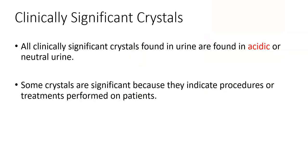Those are all the normal crystals. Now we're getting into clinically significant crystals, which mean something is going on with the patient. All clinically significant crystals are found in either neutral or acidic urine — they don't go above pH seven. Some crystals are significant because they indicate the patient has had some sort of treatment or procedure, but clinically significant doesn't necessarily mean the patient is in dire condition — it's significant to clinical diagnosis and treatment.